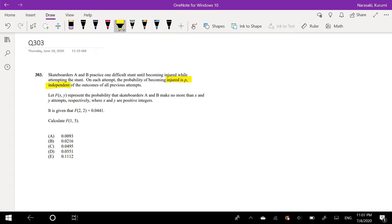Independent of the outcomes of all previous attempts. Let F of X, Y represent the probability that skateboarders A and B make no more than X and Y attempts, respectively, where X and Y are positive integers. I mean, that makes sense. You can't really do negative attempts.